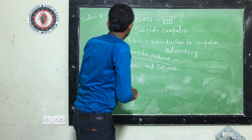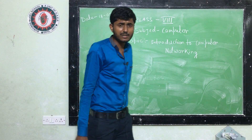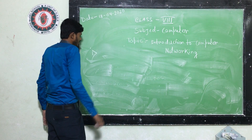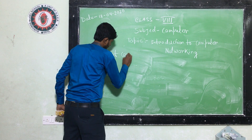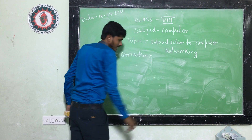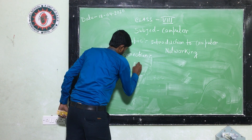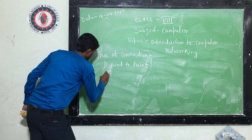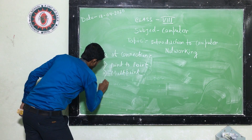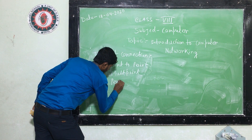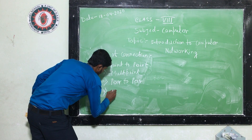In networking, there are various kinds of connections. The connections are: the first one is point-to-point, the second one is multipoint, the third one is peer-to-peer, and the last one — the fourth one — is client-server.